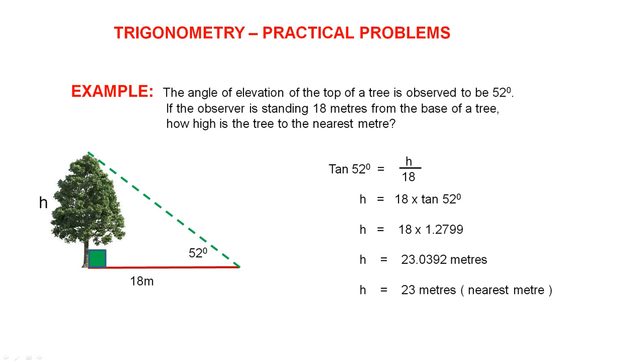Trigonometry, practical examples. Now here is a wonderful everyday example. Let's see how we can solve it using trigonometry. The angle of elevation of the top of a tree is observed to be 52 degrees. If the observer is standing 18 metres from the base of a tree, how high is the tree to the nearest metre?